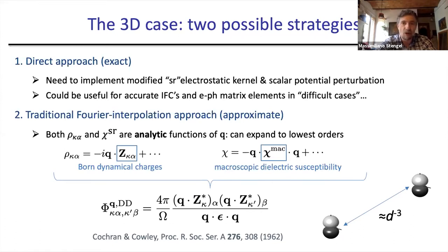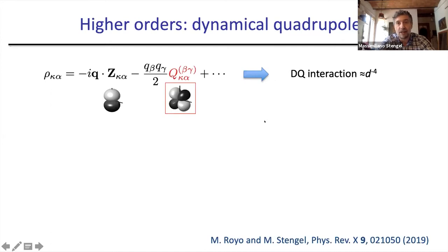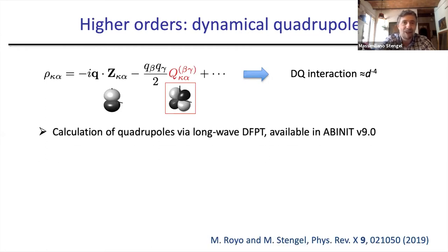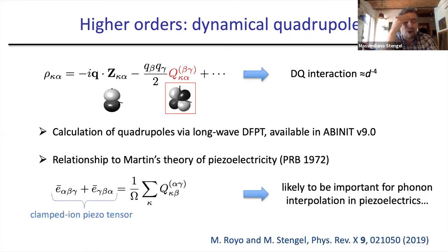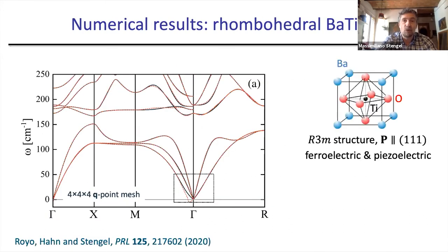Before going into the 2D problem, we did a higher-order generalization in 3D, adding the next term in the expansion of the macroscopic charge density response, which is quadrupolar in nature. This allows us to treat dipole-quadrupole interactions in the long-range forces. The motivation is twofold: first, quadrupoles are part of the long-wave DFPT implementation discussed by Michael in the previous talk; second, the quadrupoles are related to the piezoelectric tensor — in another famous work by Richard Martin — so they are likely important in piezoelectric materials.